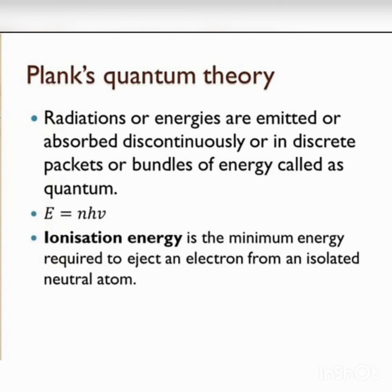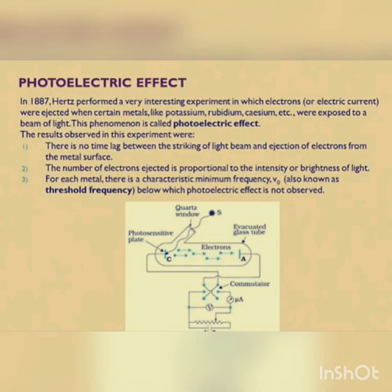Photoelectric effect: In 1887, Hertz performed an experiment in which electrons were ejected when certain metals like potassium, rubidium, and cesium were exposed to a beam of light. This phenomenon is known as the photoelectric effect. The following results were observed: electrons are ejected from the metal surface as soon as the beam of light strikes the surface; the number of electrons ejected is proportional to the intensity of light; and for each metal, there is a characteristic minimum frequency nu0, below which the photoelectric effect is not observed. This minimum frequency is known as the threshold frequency.